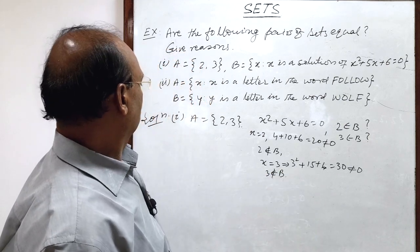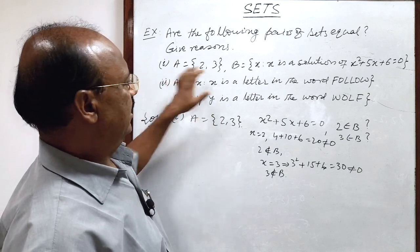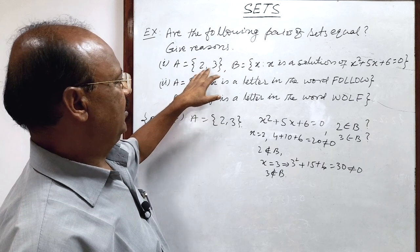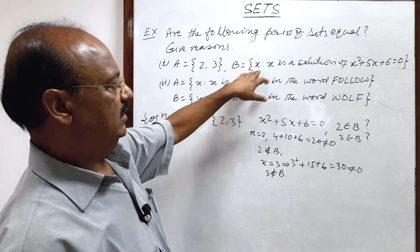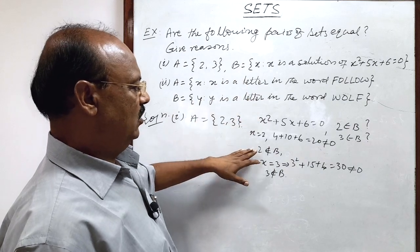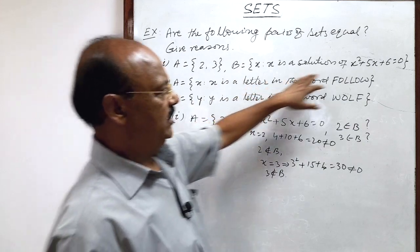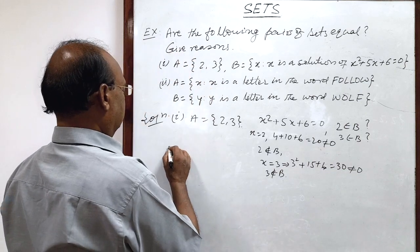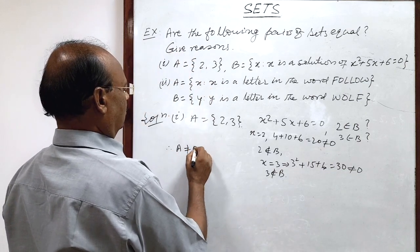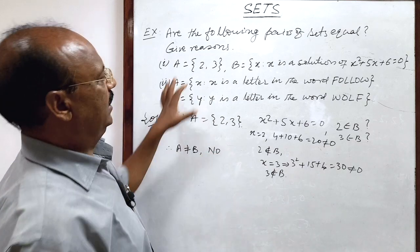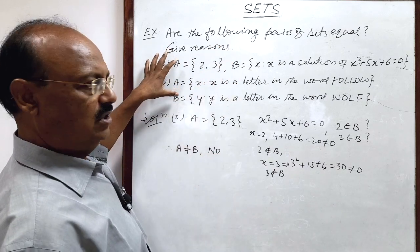What does it show? For sets A and B to be equal, set B must have both 2 and 3. But 2 and 3 cannot be members of B because they do not satisfy this equation. So we can say that A is not equal to B. The answer is no.